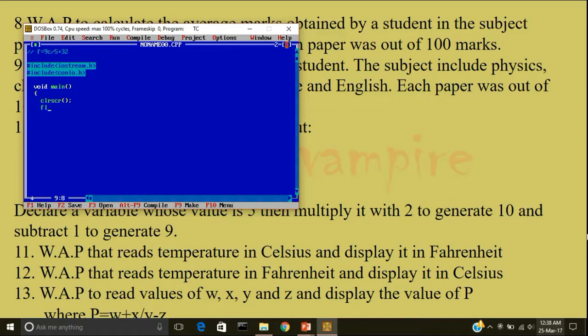I'll keep the data type float c, f. Now, I'll tell the user to enter the temperature in Celsius. Go to next line, slash n followed by a semicolon c in c.